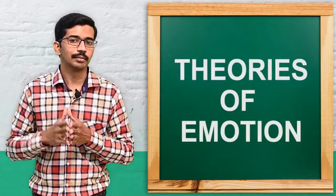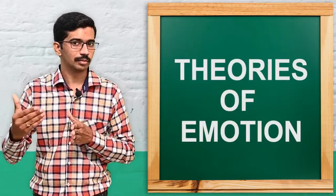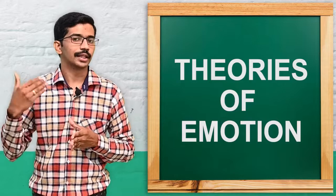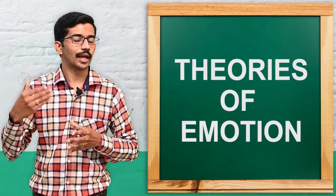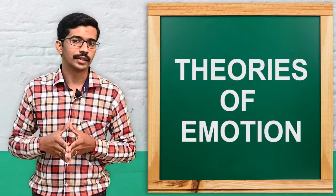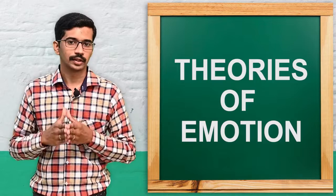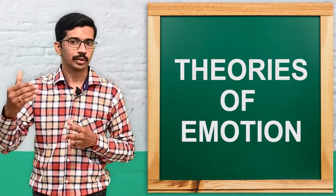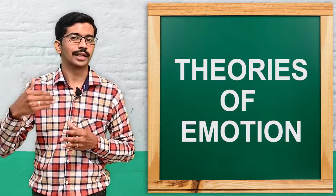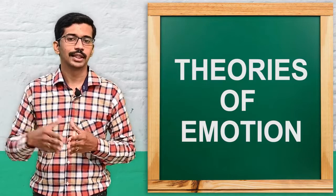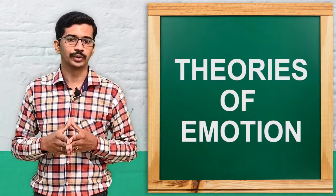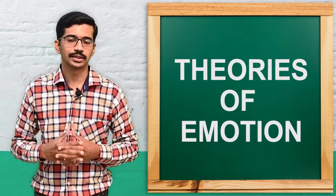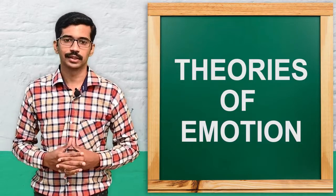So there are three important theories of emotion: the first is the James-Lange theory, the second is the Cannon-Bard theory, and the third is the Schachter-Singer theory. Today we have covered the meaning of emotion, the types of emotion, and the theories of emotion. That is all for today's class. This is Vishan signing off — till we meet in the next class.